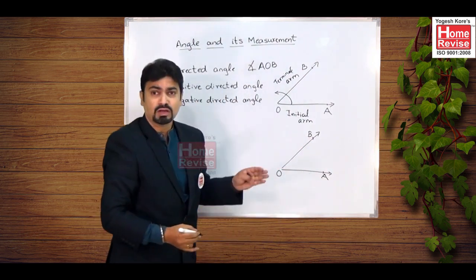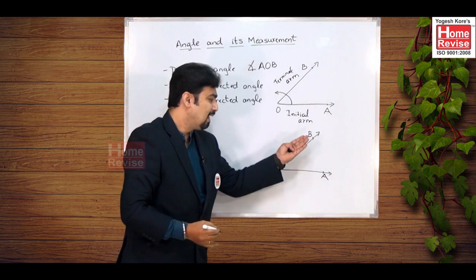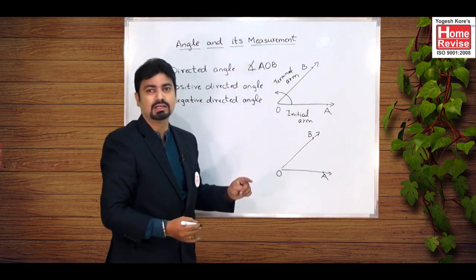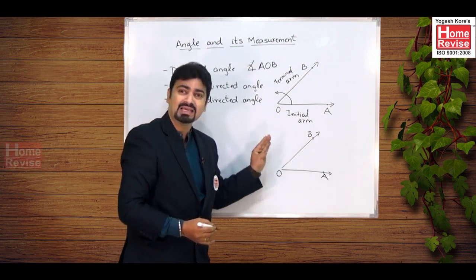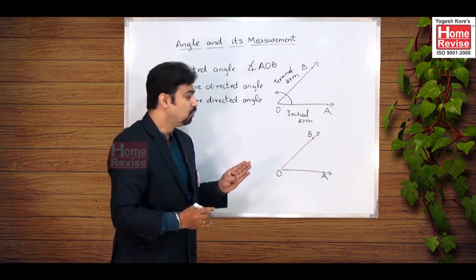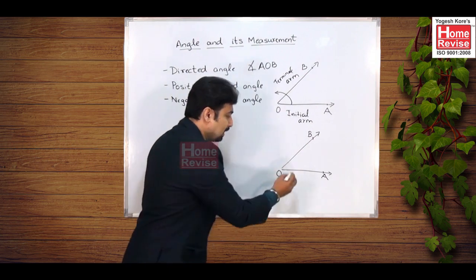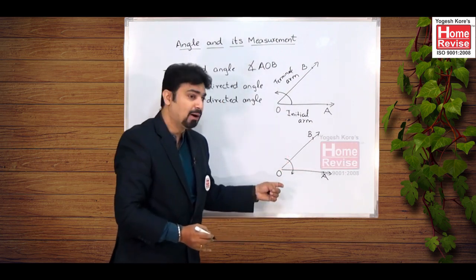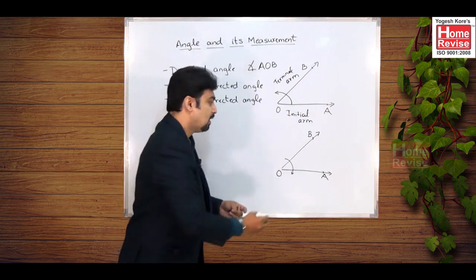Now if in this case I have drawn angle BOA such that OB is the initial arm and OA is the terminal arm, which means I have moved ray OB in clockwise direction about the point O.